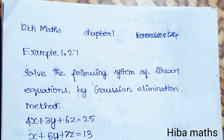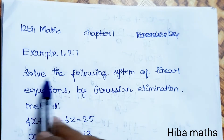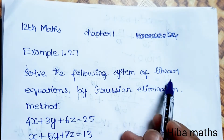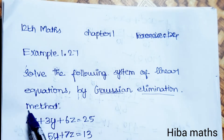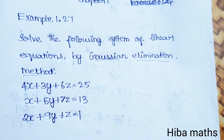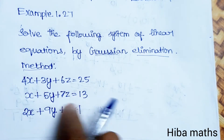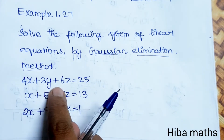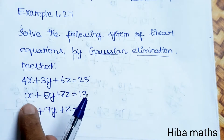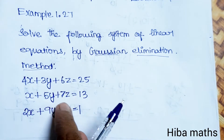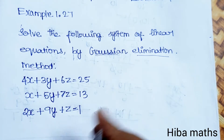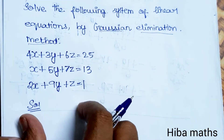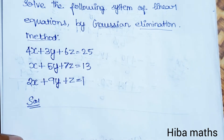Hello students, welcome to HIBA. This is 12th standard Maths, Chapter 1, Example 1.27: solve the following system of linear equations by Gaussian elimination method. It is very easy to solve. The three equations are: 4x plus 3y plus 6z equals 25, x plus 5y plus 7z equals 13, and 2x plus 9y plus z equals 1. In order to solve, we write the augmented matrix form.